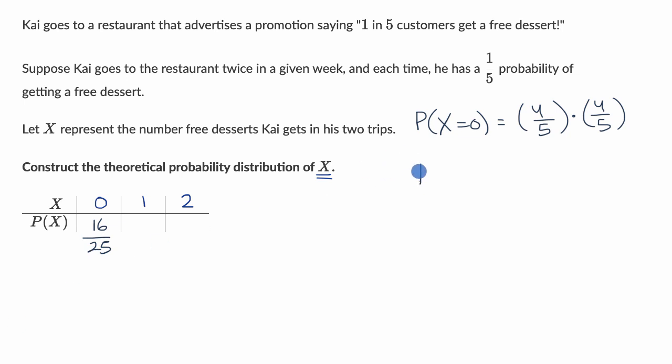Now what about the probability that X is equal to one? What is this going to be? Well, there are two scenarios over here. There's one scenario where let's say on day one, he does not get the dessert, and on day two, he does get the dessert.